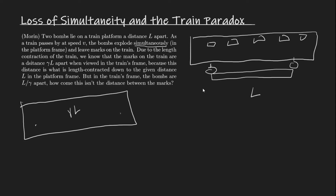The keyword here is 'simultaneously in the platform frame.' Simultaneity is a bit vague without a concrete quantitative definition. In the reference frame of the platform, let's place a light source right in the middle at L over 2 from each bomb. At some point the light source starts emitting light, and light travels to each bomb at the same speed in both directions. This allows us to define simultaneity: the bombs explode when the light reaches them.